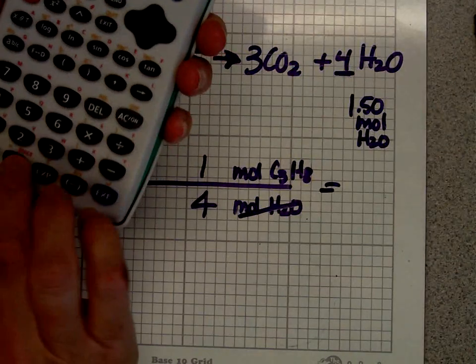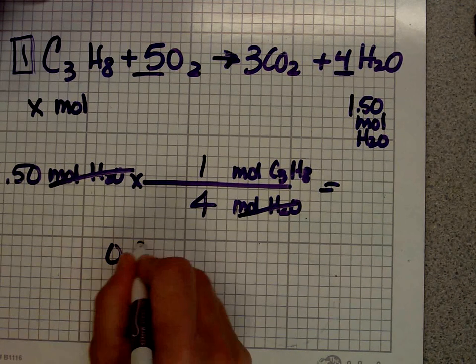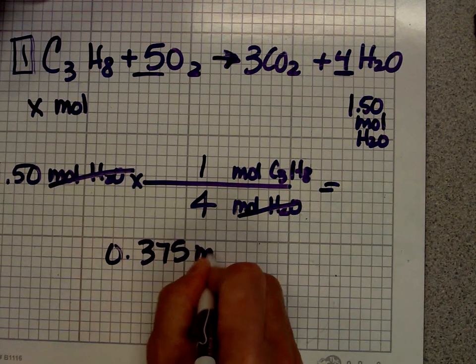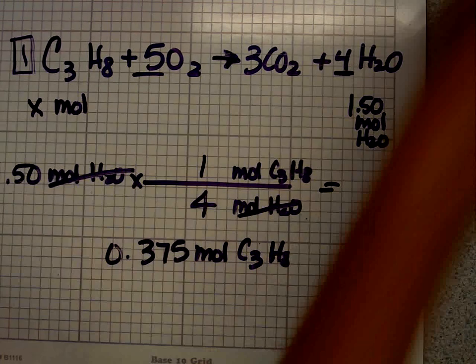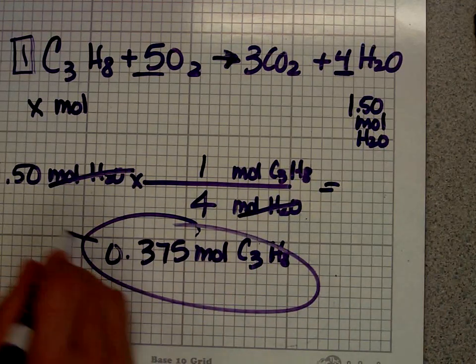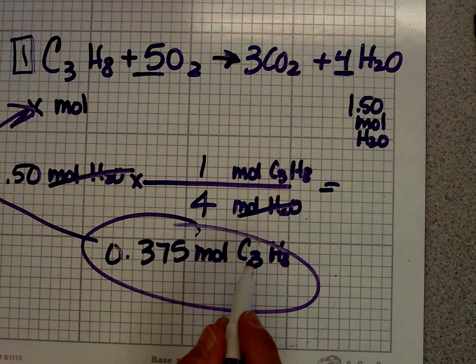Now we've gotten rid of moles of water. 1.5 divided by 4 gives us 0.375 moles of C3H8. You always have to go back and ask yourself, did this answer the question? Yes. And do I have the right number of significant figures? Yes, I do.